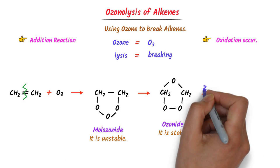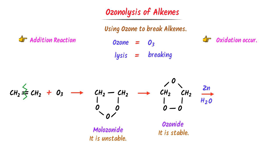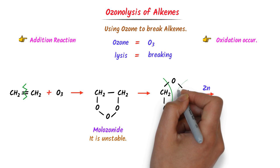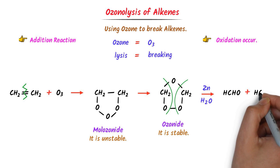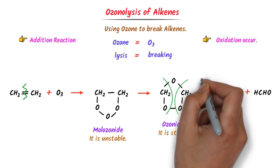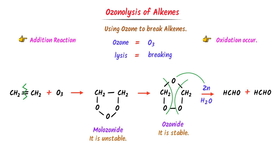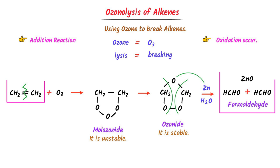Finally, we add zinc plus water to the ozonide. The CH2–oxygen bonds break on both sides, and we get HCHO and HCHO. Zinc, being electropositive, attacks the electronegative oxygen to form zinc oxide. Both products are known as formaldehyde. Thus, using ozone, we can easily break alkene into aldehyde like formaldehyde.